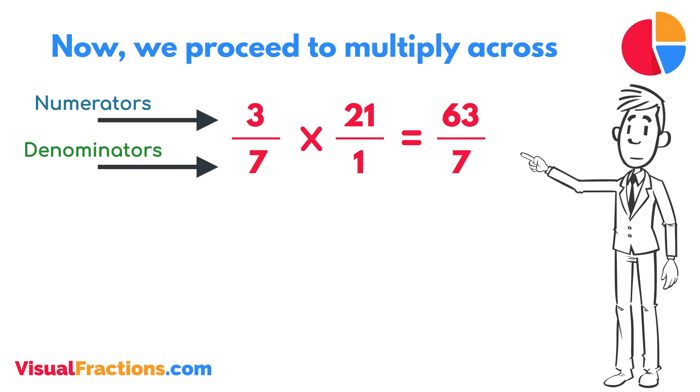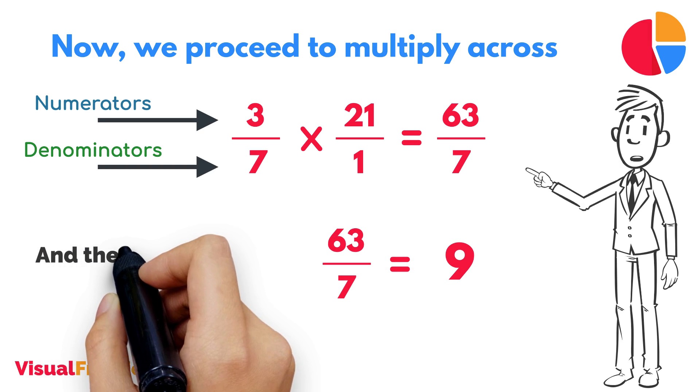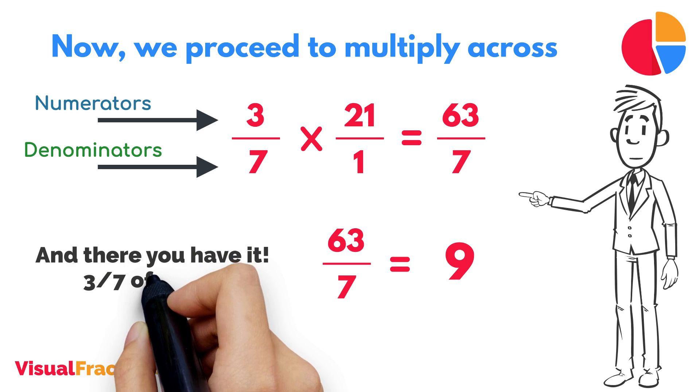To find the final answer, divide the numerator by the denominator. So, 63 divided by 7 equals 9. And there you have it, 3/7 of 21 is 9.